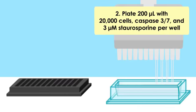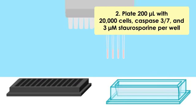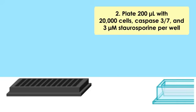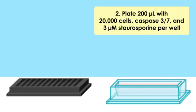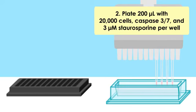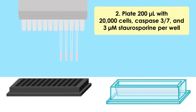Based on the measured concentration of your cells, adjust the volume per well. Plate 20,000 cells with caspase-3-7 along with either 3-micromolar staurosporine or vehicle control in a volume of 200 microliters.